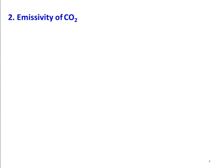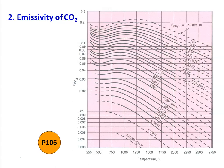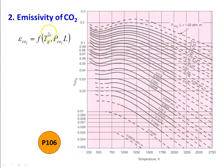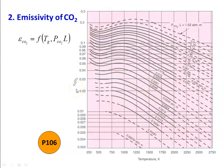Next, we calculate the emissivity of CO₂ using a graph on page 106 of your heat and mass transfer data book. The emissivity of CO₂ is a function of gas temperature and the product of partial pressure of CO₂ times beam length (PCO₂ × L). The x-axis of the graph is gas temperature in Kelvin, the y-axis is ε_CO₂, and the lines represent different values of PCO₂ × L. Knowing the temperature and PCO₂ × L, you can read off the emissivity of CO₂.